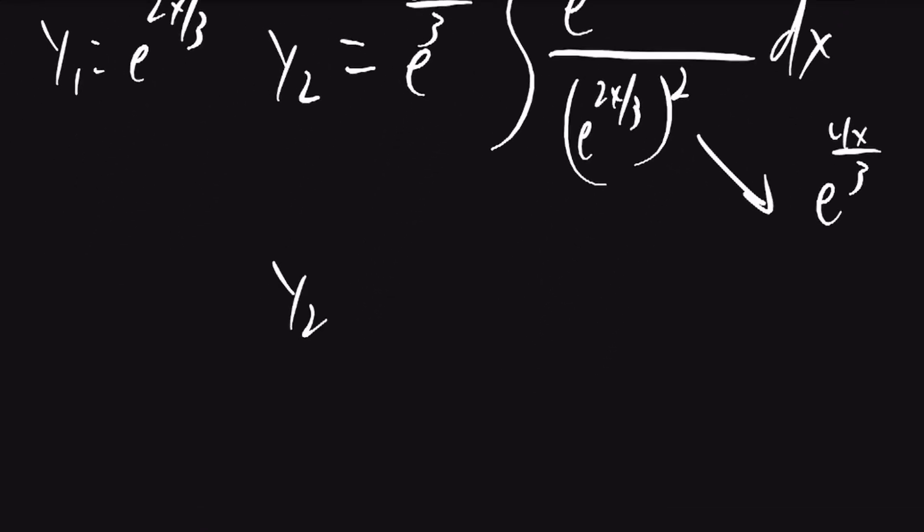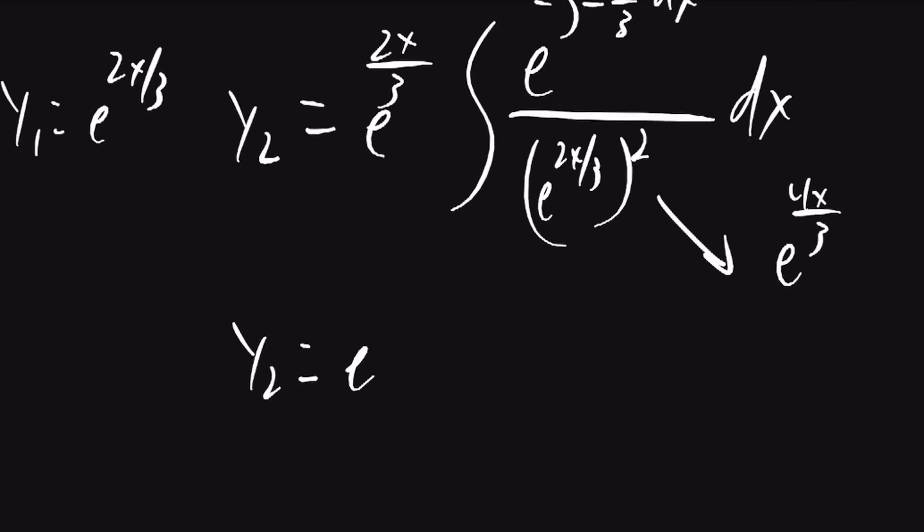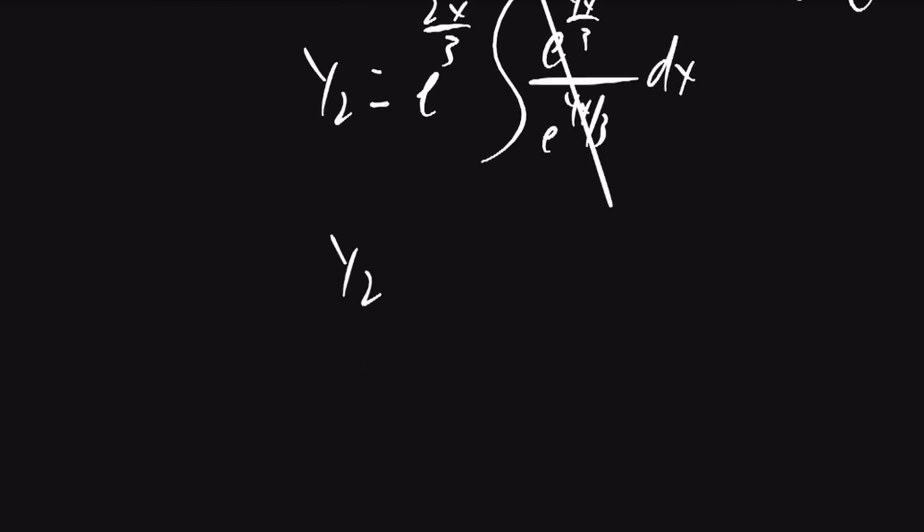So y2 will be equal to e to the 2x over 3 times the integral of e to the 4x over 3 over e to the 4x over 3 dx. The e terms will cancel. So y2 will be equal to e to the 2x over 3 times the integral of dx.